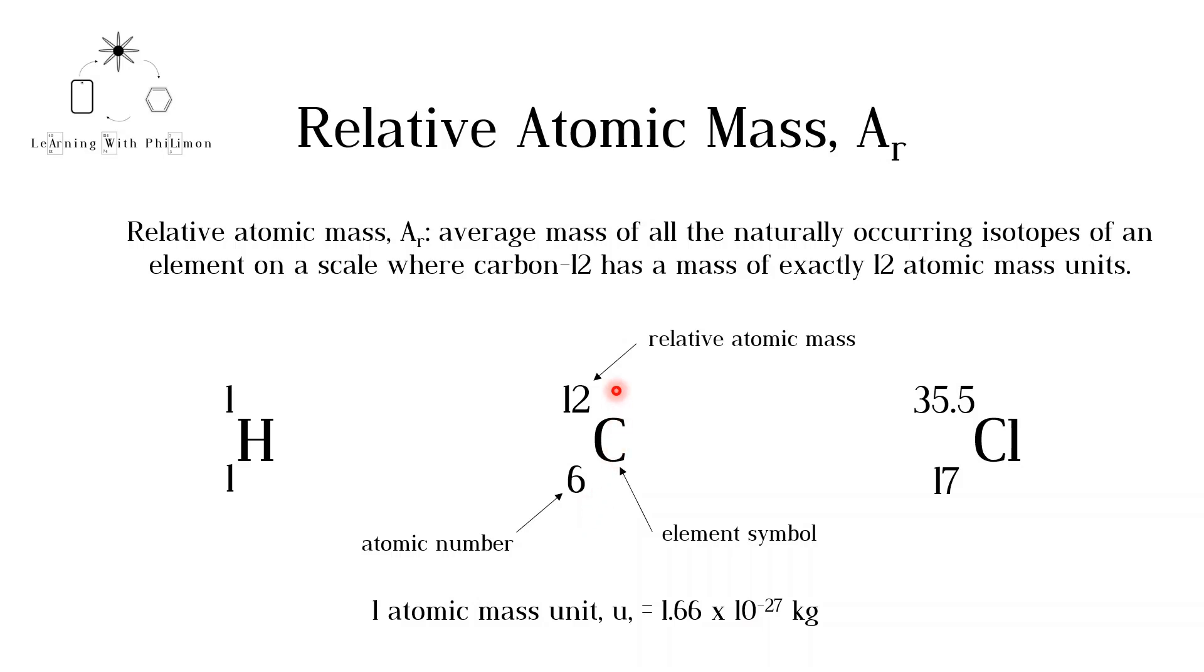For example, the element symbol of carbon is C. Its atomic number is 6, so an atom of carbon contains 6 protons.